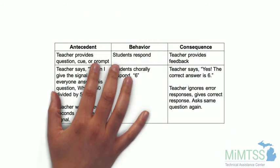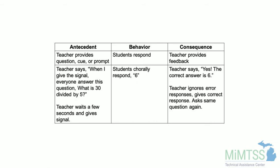Let's take an OTR and put it into the A-B-C paradigm that we covered during your class-wide PBIS professional learning. Recall, the antecedent takes place before the behavior and the consequence is what happens after the behavior. In the case of the OTR, the antecedent is the teacher providing a question, cue, or prompt. The behavior is the student responding to the OTR, and the consequence, or what follows the behavior, is the teacher giving feedback.